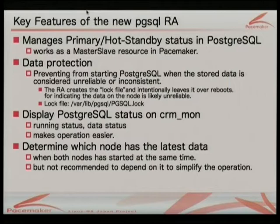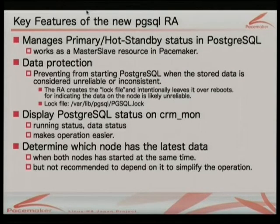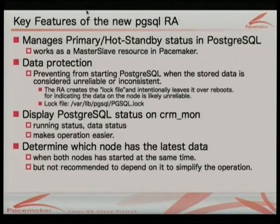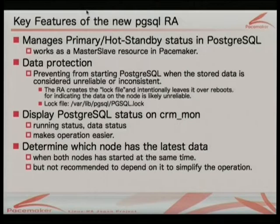We enhanced the PostgreSQL resource agent script. The key difference is, first, it supports multi-state handling of the PostgreSQL database. Pacemaker already supports multi-state resources called MasterSlave, so you can use the new resource agent as a MasterSlave resource. This new agent also supports a kind of data protection. Suppose you have two nodes — one node's data is correct, but the other node's data is corrupt. If you run that corrupt node, the data will be totally corrupted. So the resource agent tries to prevent a start if the data is old or inconsistent.